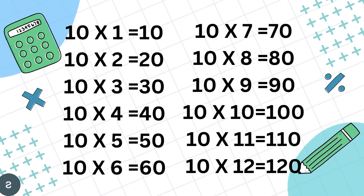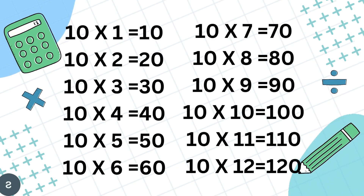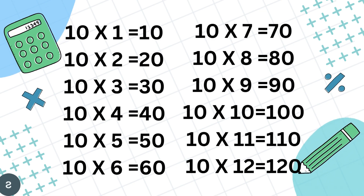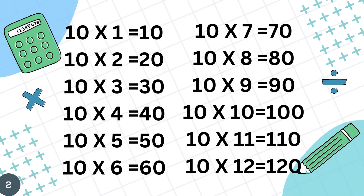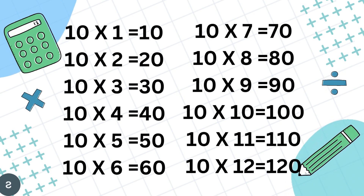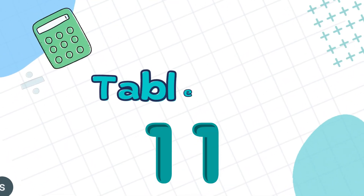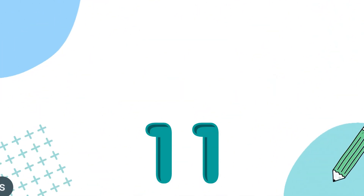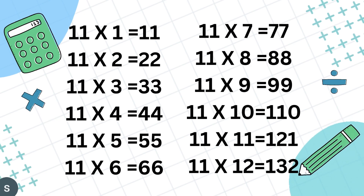10 7's are 70, 10 8's are 80, 10 9's are 90, 10 10's are 100, 10 11's are 110, 10 12's are 120.